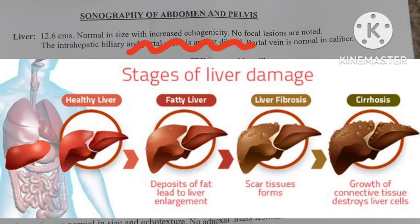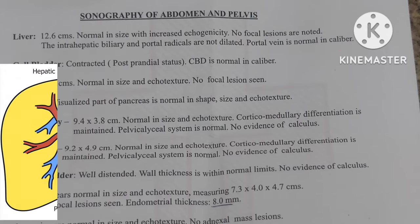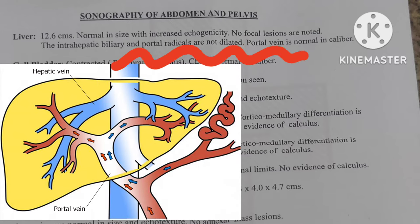They also mention about focal lesions — if any lesions are seen in the liver. If there are none, they write 'no focal lesions seen.' If lesions are present, they mention 'focal lesions noted.' The liver also contains blood vessels like intrahepatic radicals, portal radicals, and portal veins. If these are normal, they report as normal; if dilated, they mention the blood vessels are dilated.